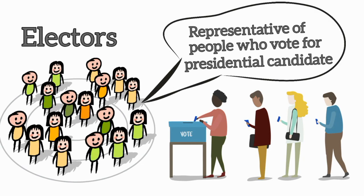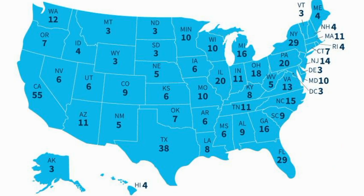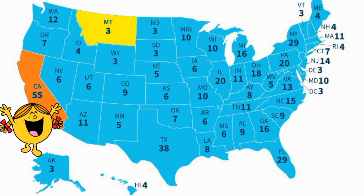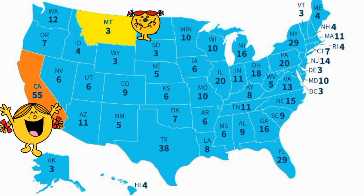These electors are the representatives of the people who will vote for the presidential candidates. The number of electors from each state is based on congressional representation, which in turn is based on the population of the state. For example, California is the most populated state and has 55 electors, while a state such as Montana, which is geographically large but has a relatively small population, only has three electors.